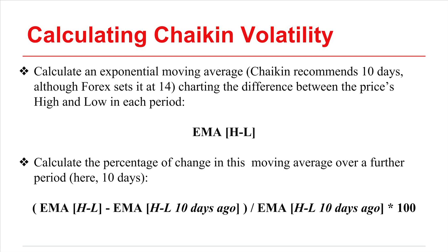With this exponential moving average, you calculate the percentage of change over a further period. In this equation it's 10 days. So that's the exponential moving average of the high minus the low, minus the exponential moving average of the high minus the low 10 days ago, times 100 to get the percentage Chaikin Volatility.